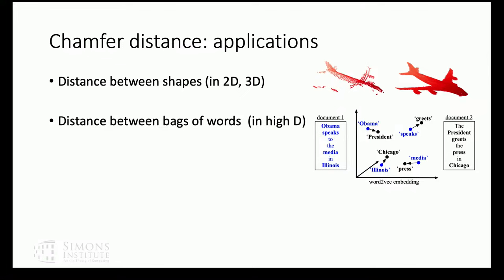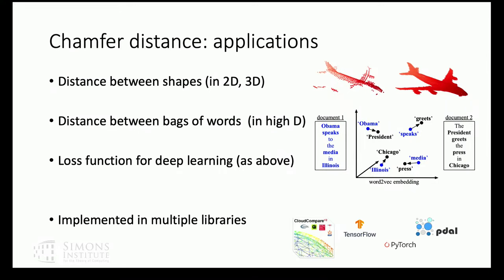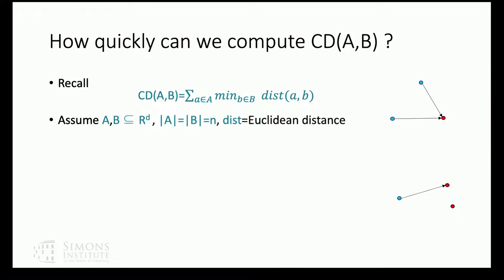Over the last ten years, deep learning has also found many applications for chamfer distance. Whenever you want to predict or regress a shape, you need a notion of distance between your prediction and the ground truth. People often use chamfer distance for this — precisely because it's much more efficient than EMD. It has been implemented in many libraries for both deep learning and point cloud comparison.